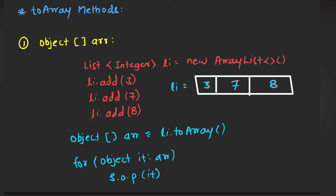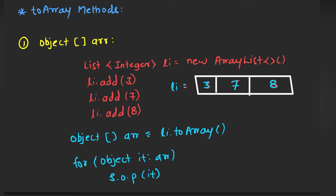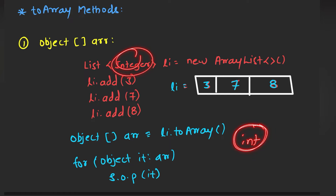I have declared a list called li and it basically contains three elements: 3, 7, and 8. Now what I need to do is convert this collection list into an array. If I use the first method called the object array, there are certain disadvantages. As I mentioned, my list contains objects — this Integer is not a normal primitive data type like int. This is treated as a primitive data type, whereas Integer is treated as an object.